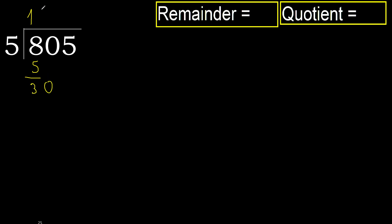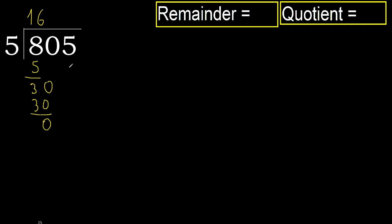5 multiplied by 6 is 30, it is not greater. Subtract 0. Next, eliminate 0 on this side. 5.